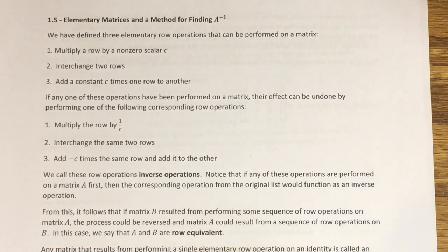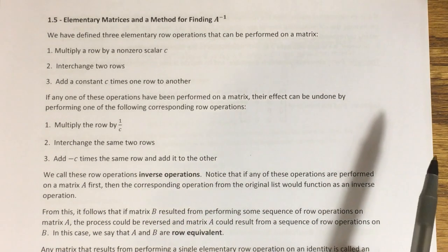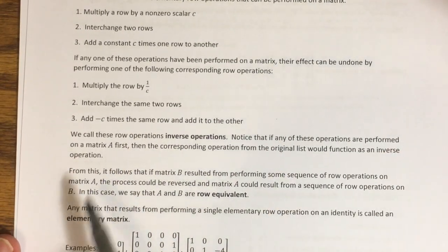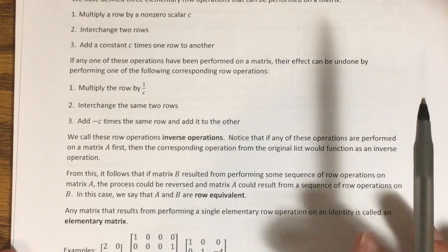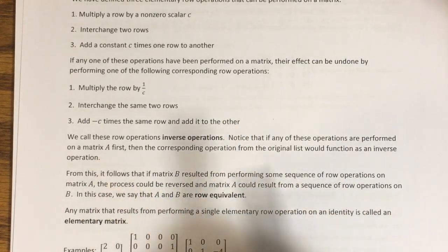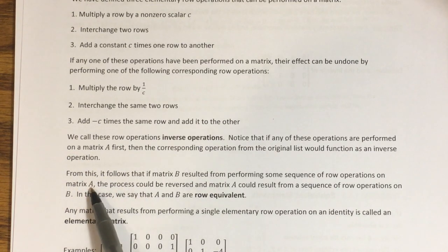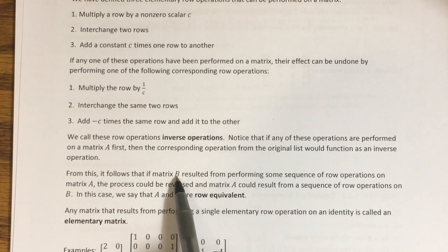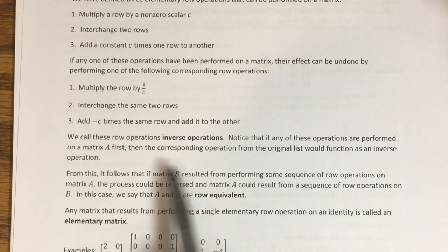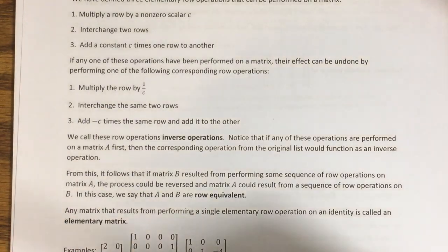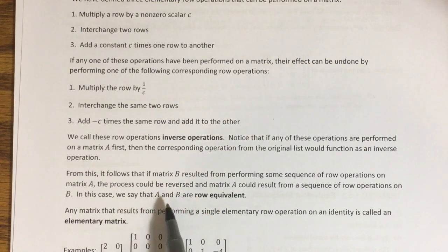So if we carry this out for more than one step, what this means is that if you perform any number of row operations on some matrix A getting you to a matrix B, then there's another sequence of row operations — the inverse of all the ones you just did — that would bring you from B back to A again. We can go back and forth from A to B by using a sequence of row operations. In that case, we say that matrices A and B are row equivalent, which just means either matrix can be obtained from the other by some series of row operations.